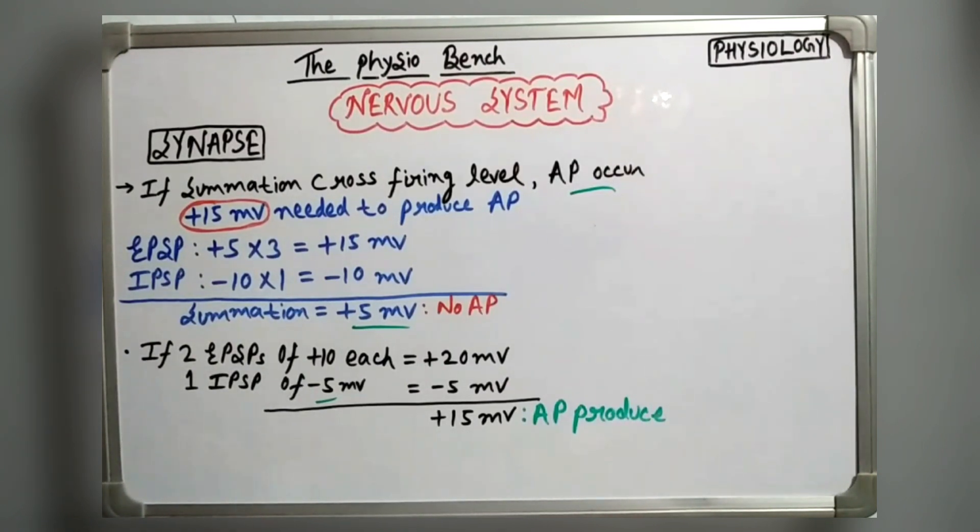Let's say for example, if we get three EPSPs of plus 5 mV each, the total EPSP is plus 15 mV. If we get one IPSP of minus 10 mV, then the total is plus 5 mV. If we need more than 15 mV to produce an action potential, we won't get one because we only have 5 mV.